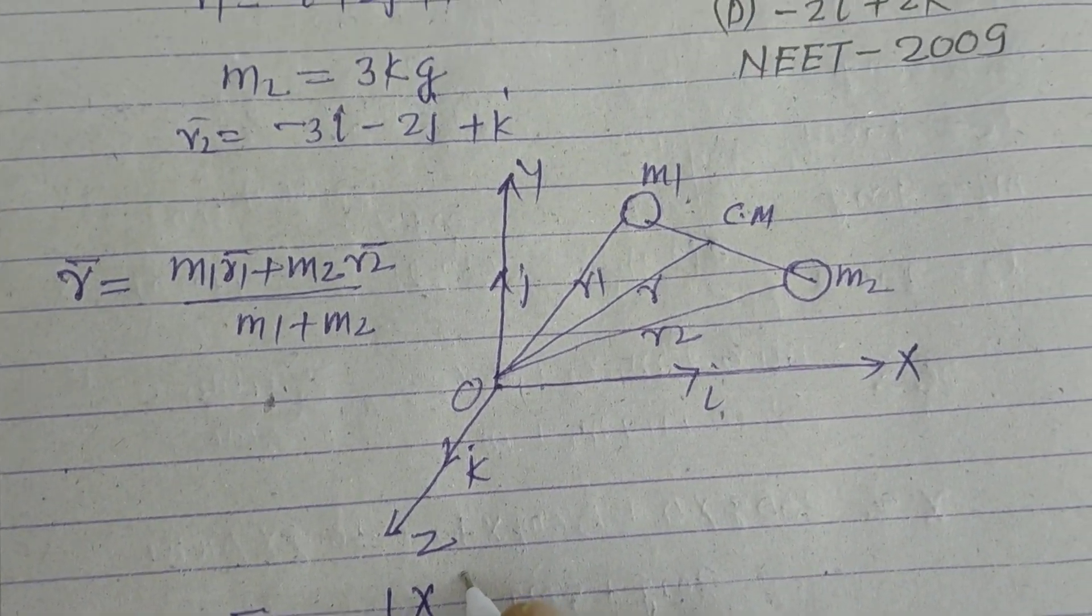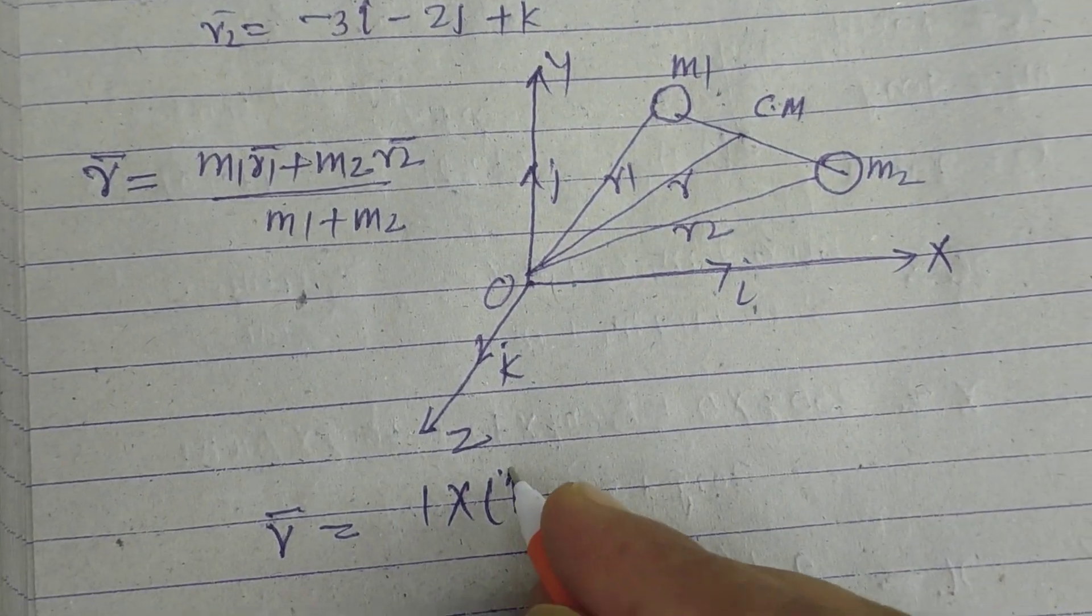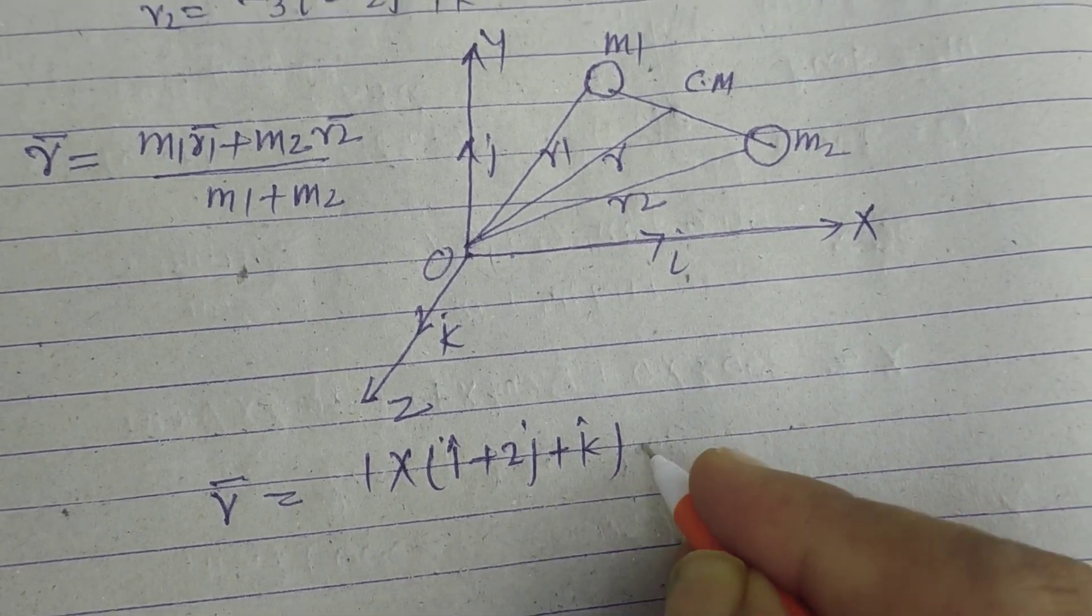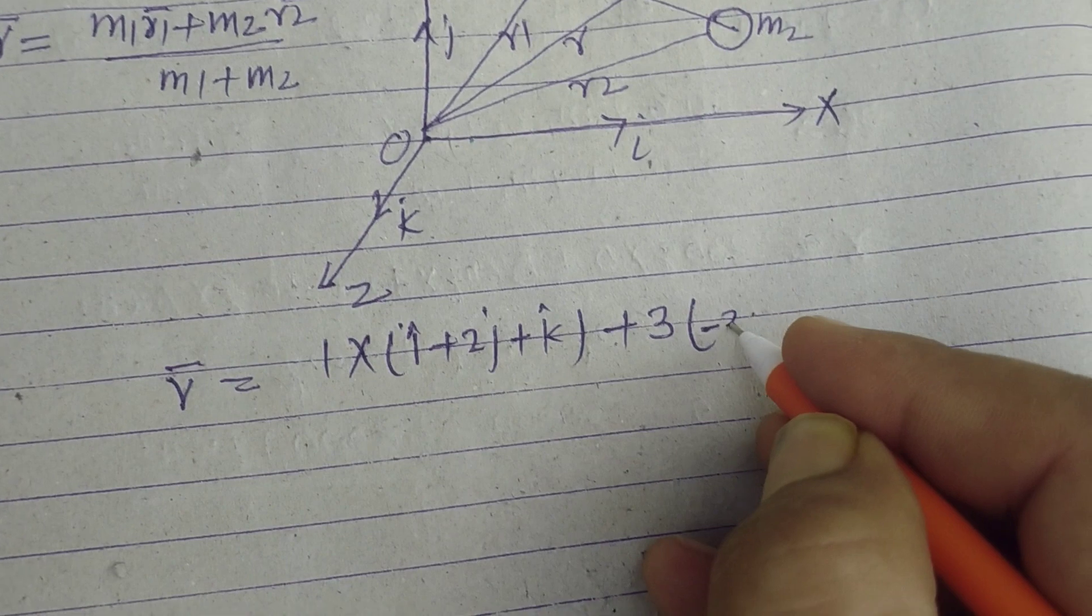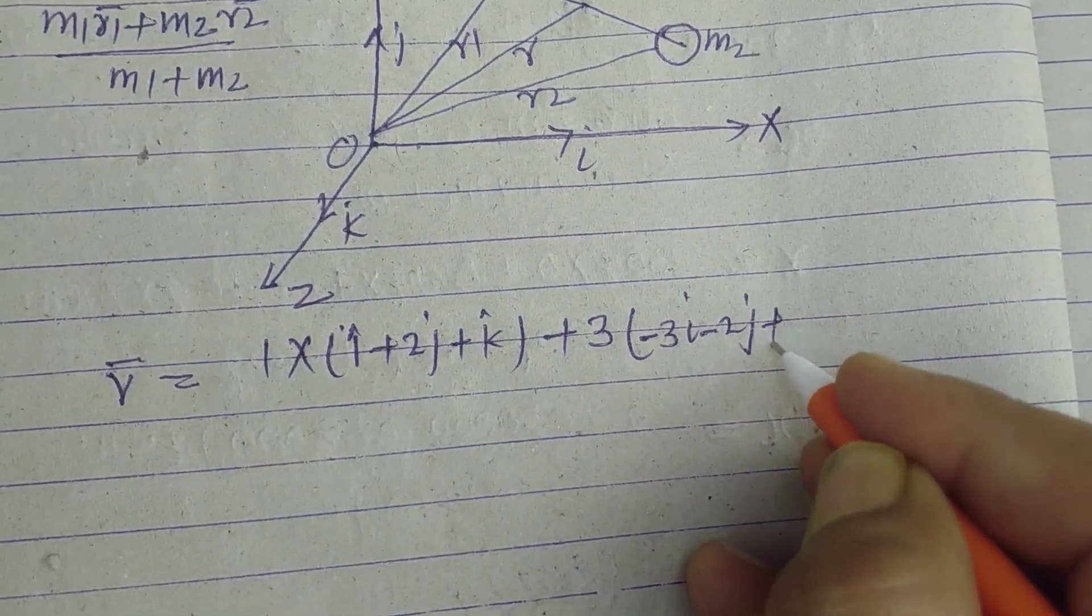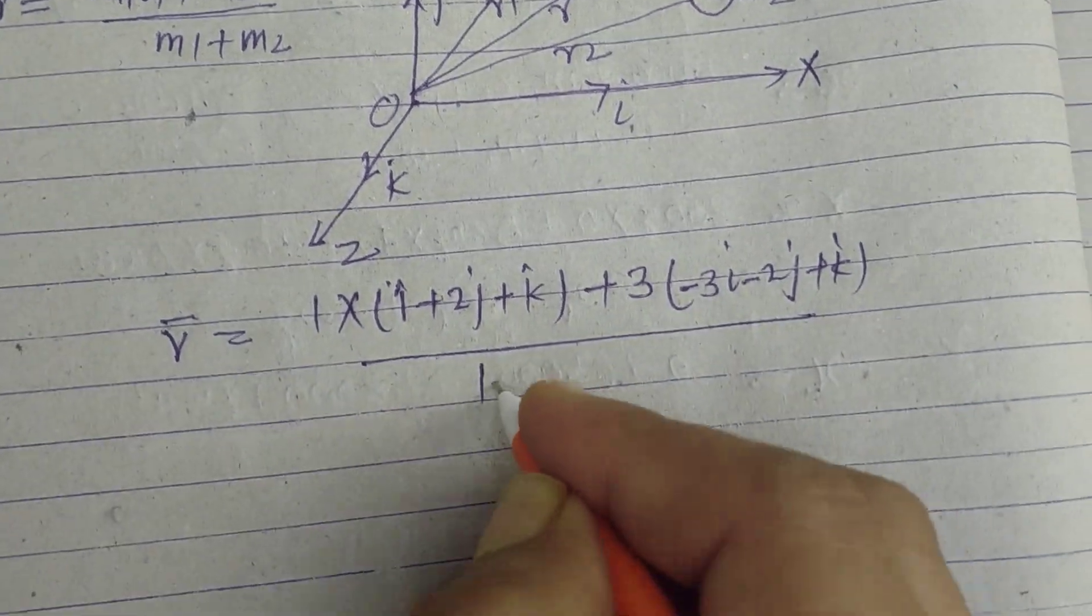So r equals - m1 is 1 and its position vector is i + 2j + k, plus m2 is 3 and its position vector is -3i - 2j + k, over m1 (1) plus m2 (3).